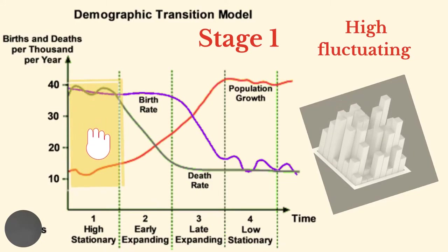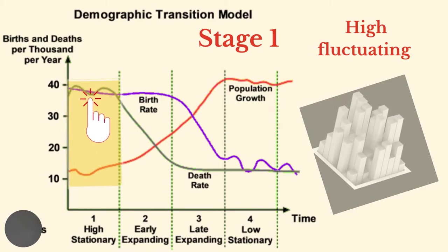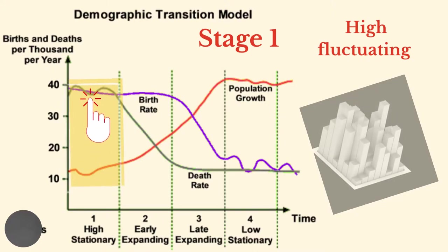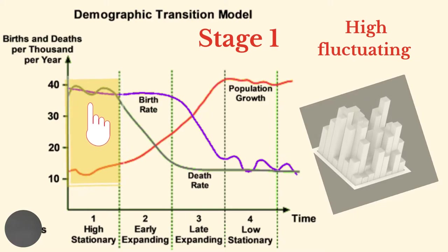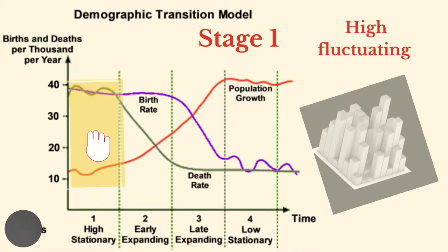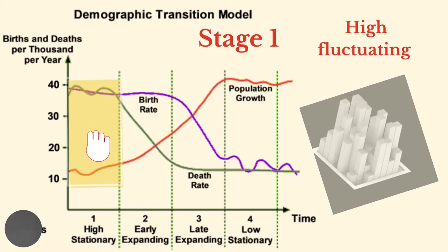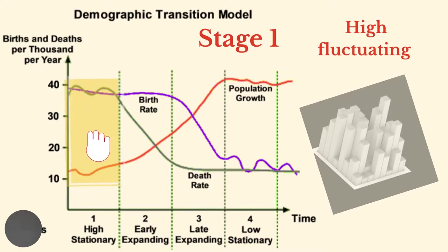The model shows a number of stages. At stage one, both birth rate and death rates are high and fluctuating. Birth rates are high due to factors such as a lack of birth control and the need to have many children to work on the land. Contraceptives are also generally unavailable and unacceptable in some places. Death rates are high due to famines, wars, and diseases.